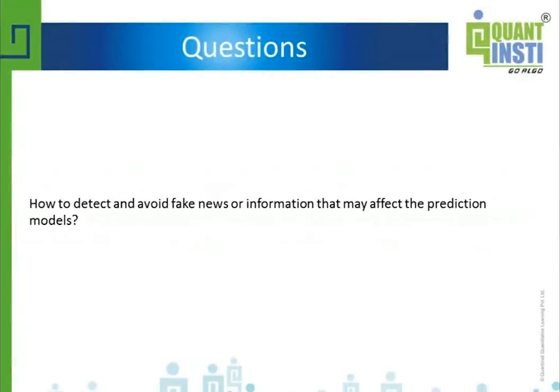How to detect and avoid fake news or information that may affect the prediction models? Well, there are two ways. The most obvious way is that you have to use supervised learning. Somebody has to label a certain piece of news as fake, otherwise the model cannot learn what is fake news.